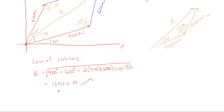So we just found the resultant magnitude. Now we have to find where it is, so we need to find that theta angle. Looking at our triangle now with this side known, we know all three sides and one internal angle, but we need to determine the other angle. Anytime you know all three sides and one angle and need to find another angle, you're going to use the law of sines.